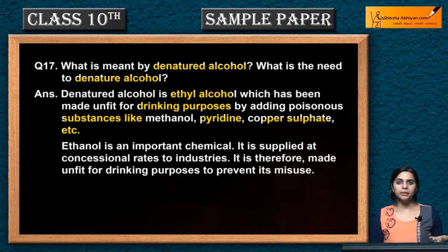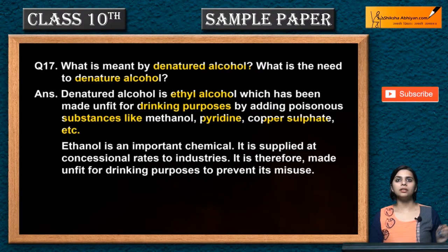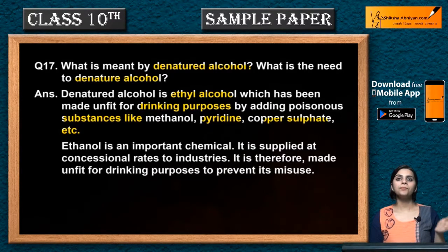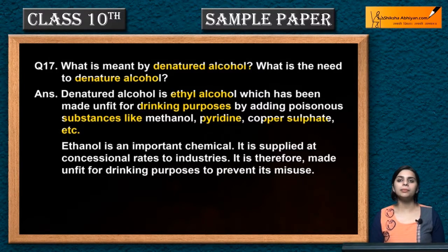Alcohol is also used for drinking purposes. If it is sent to an industry and workers drink it, that is a misuse of ethyl alcohol. That's why methanol, copper sulfate, or some other poisonous substances are added to make it unfit for drinking — it will be dangerous for your health. That's why we do denatured alcohol.